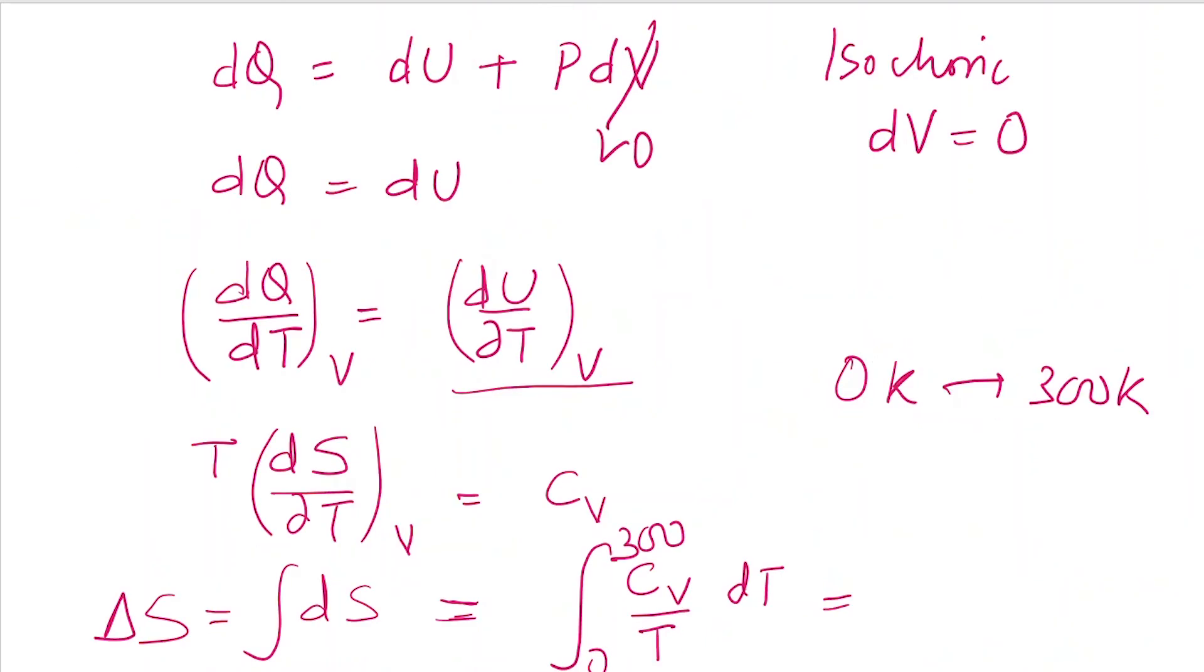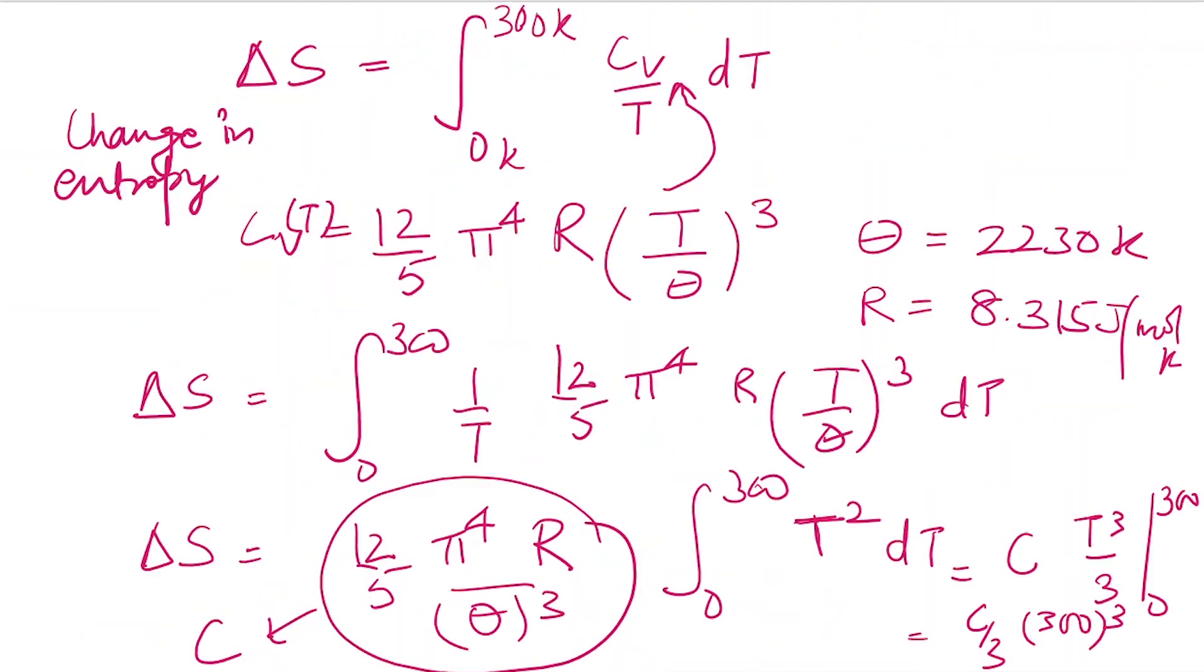We are given molar heat capacity, so if this is total heat capacity, we have to multiply by number of moles. We have to multiply with n everywhere because this is molar heat capacity.